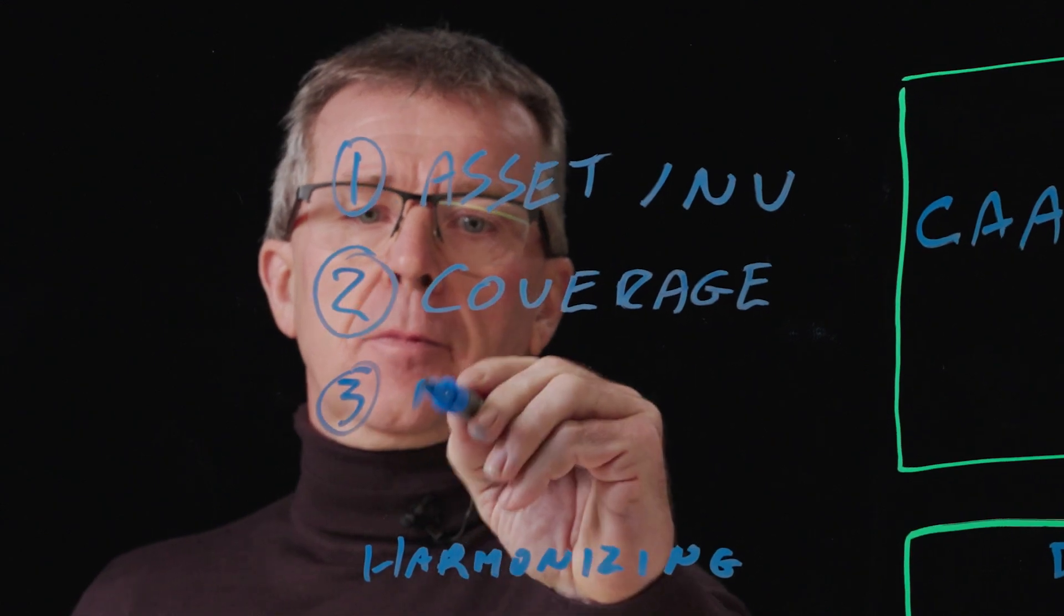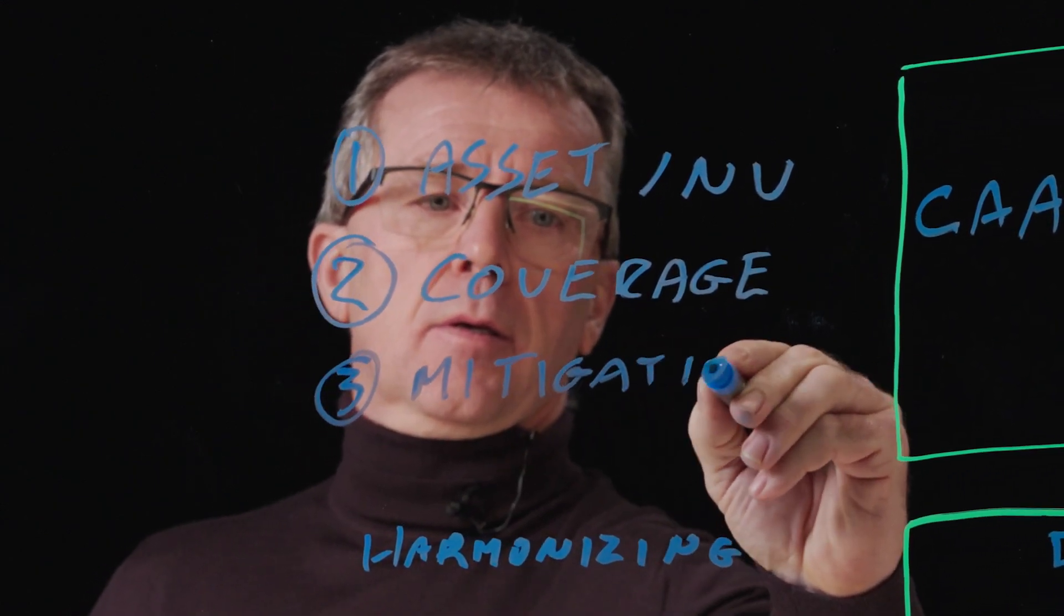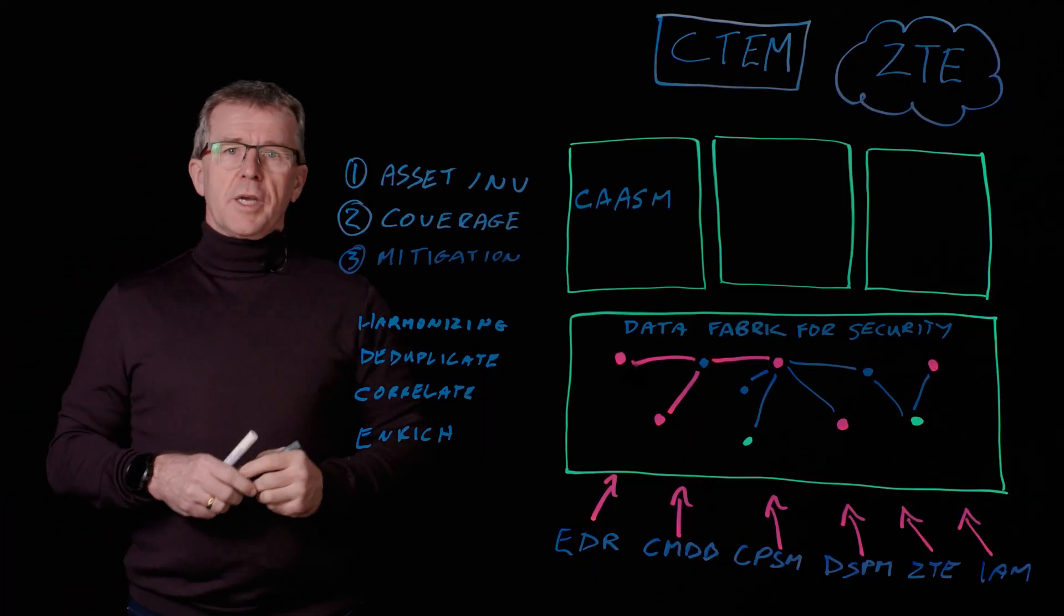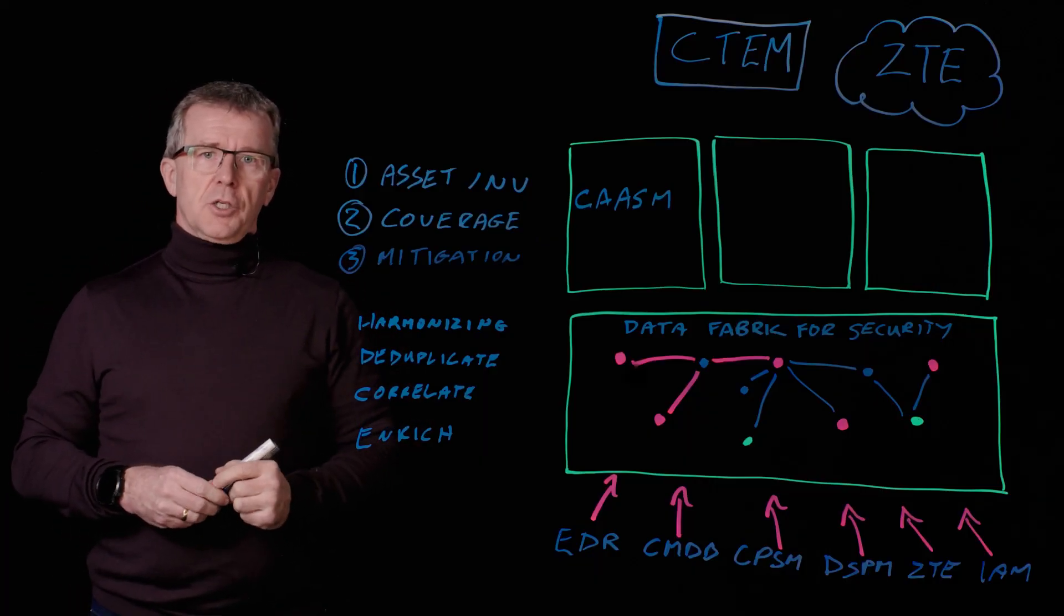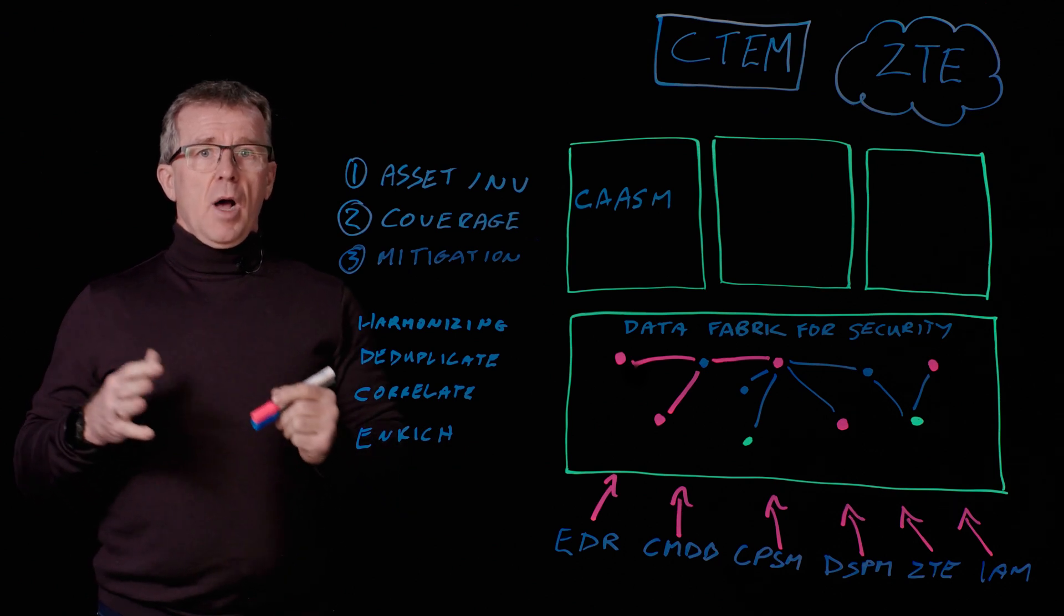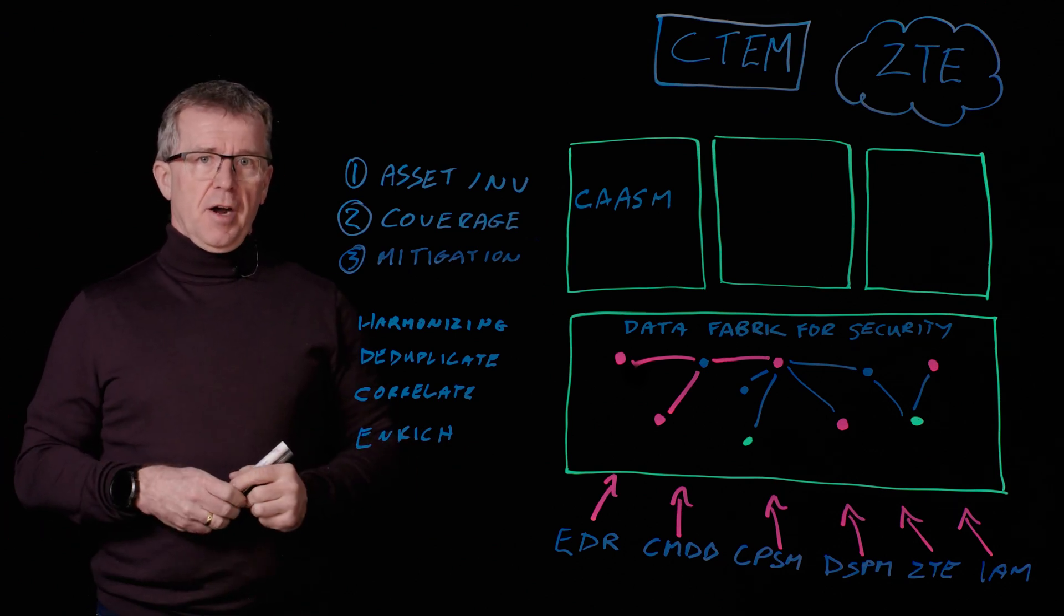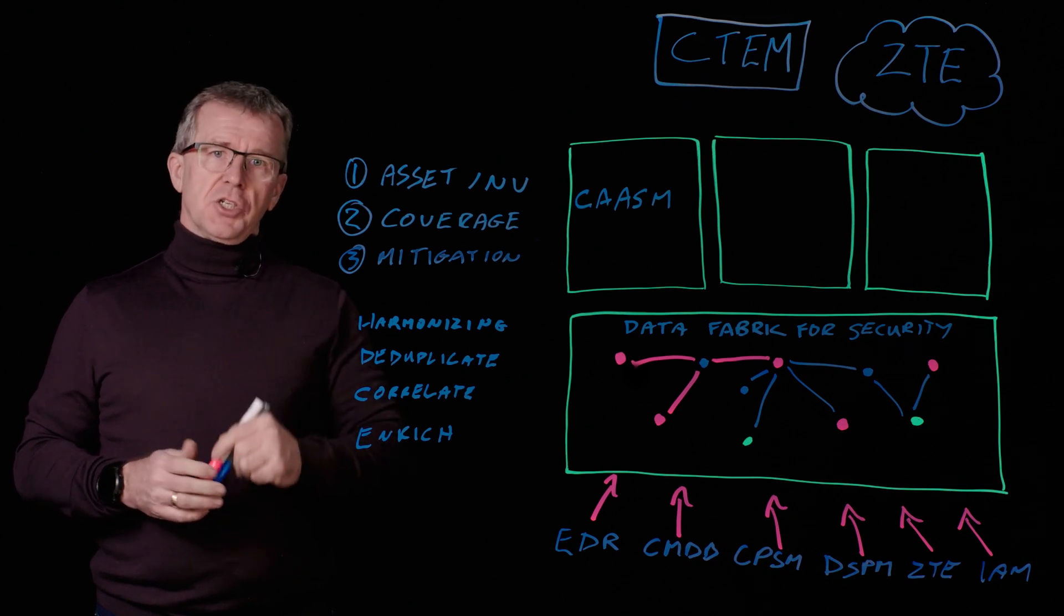And lastly, risk mitigation. We can automate workflows to enable things like tickets to identify an agent that is out of date and needs to be rectified. And it doesn't stop there.